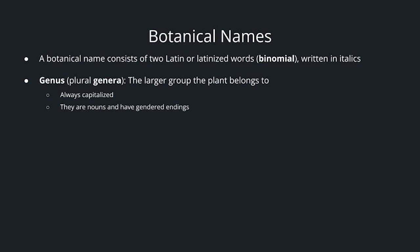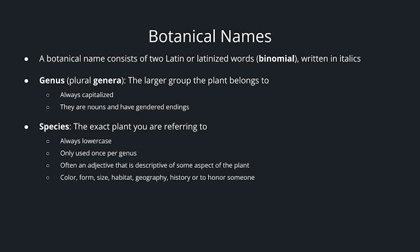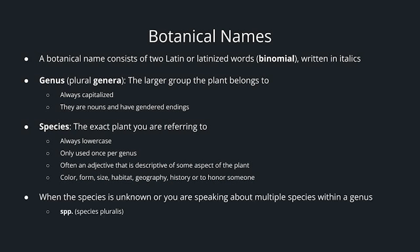The genus — plural genera — is the larger group the plant belongs to. It's always capitalized and is a noun with a gendered ending. The species refers to the exact plant you're referring to; it's always lowercase and only used once per genus. It's often an adjective descriptive of some aspect of the plant — it could be color, form, size, the habitat it grows in, geography, the history of the plant, or it could be named to honor someone. When the species is unknown or you're speaking about multiple species within a genus, you use SPP, which means species pluralis.